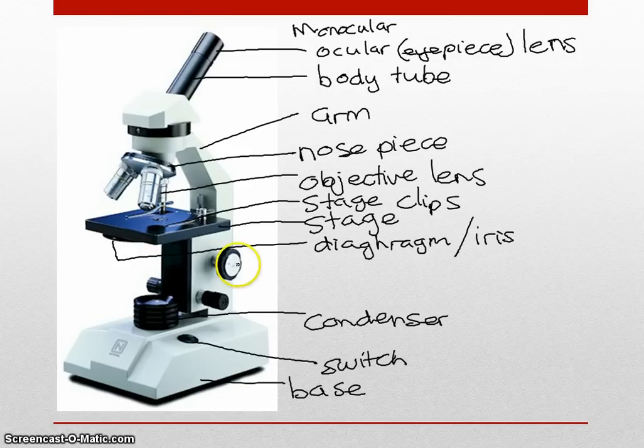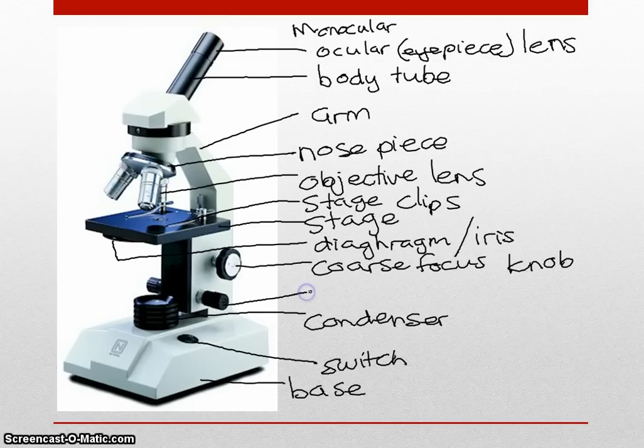We need to focus using two focusing knobs. This one is the coarse focus knob, and this one is the fine focus knob. The coarse focus knob is used first. Once something is focused with the coarse knob, you can then refine it using the fine focus.